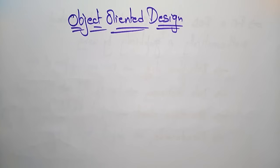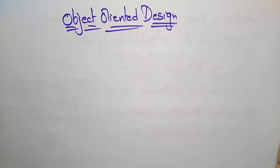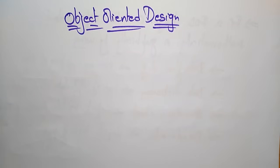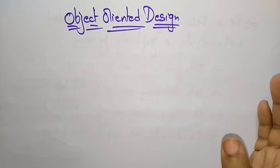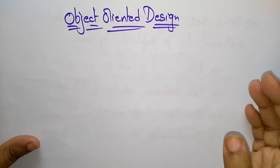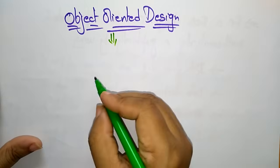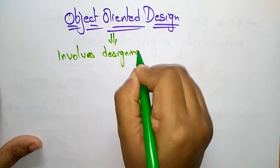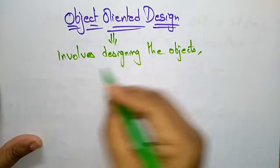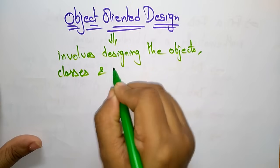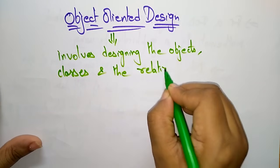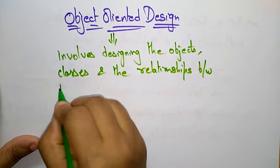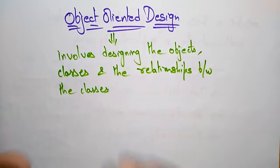Hi students. Coming to the next topic, that is object-oriented design. What is object-oriented design? While you're developing any software using an object-oriented programming language, you need to design some concepts related to object-oriented design. The main thing is that object-oriented design involves designing the objects, classes, and the relationships between the classes.